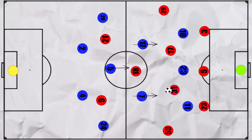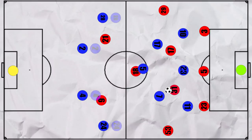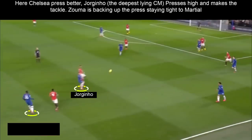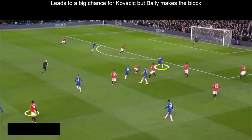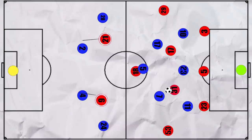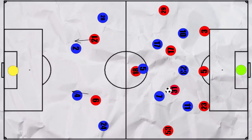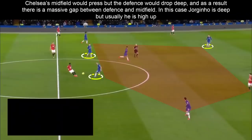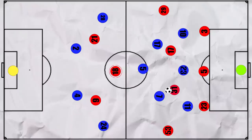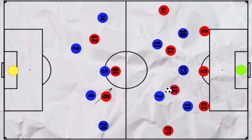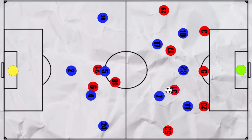When Chelsea pressed high, they would often commit their entire central midfield to the press, which wouldn't have been a problem if the back line backed this up. However, due to the fear of Martial and James' pace in behind, they often stayed deeper, leaving a gaping hole between defence and midfield. Bruno Fernandes would often move into these positions, drawing a central midfielder, whilst Martial would drop deep to draw a centre back, leaving space for James to run into. The positioning of the front three during this manoeuvre was fluid, making it even harder for Chelsea to track, and this did lead to a couple of big chances for United.